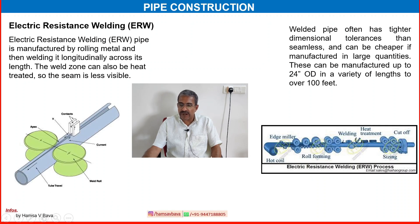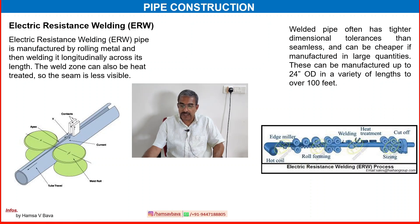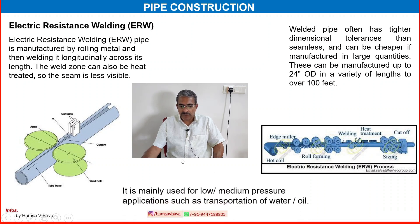Welded pipe often has tighter dimensional tolerances than seamless and can be cheaper if manufactured in large quantities. This can be manufactured up to 24 inch OD in a variety of lengths over 100 feet. It is mainly used for low and medium pressure applications such as transportation of water and oil.